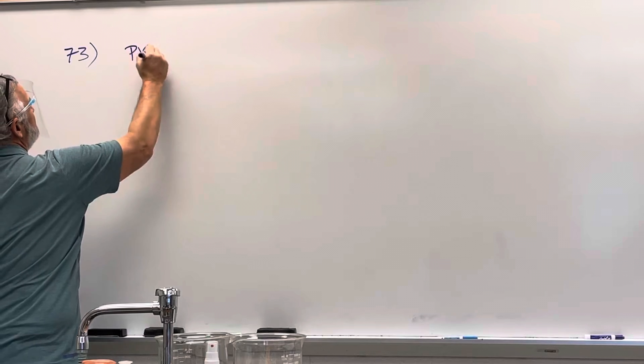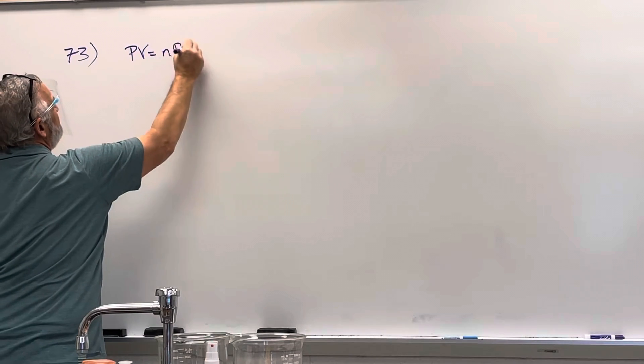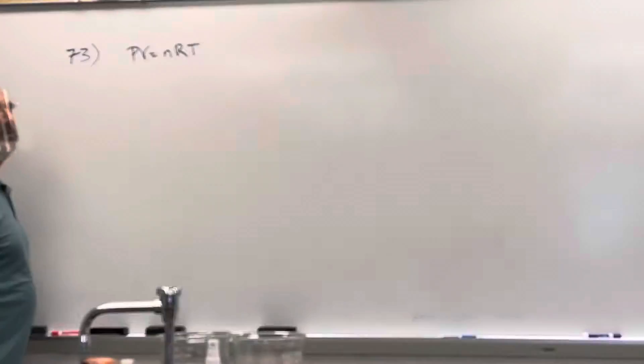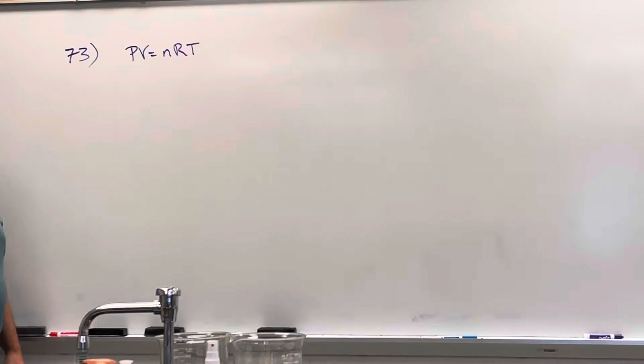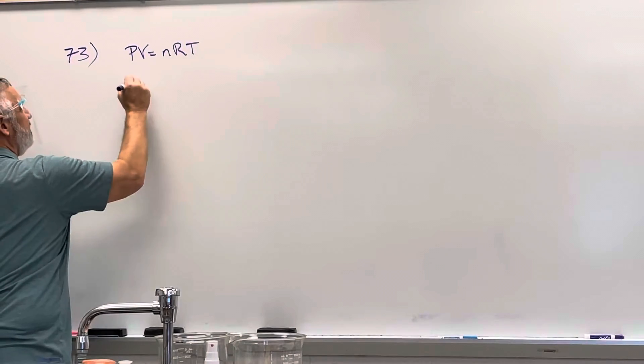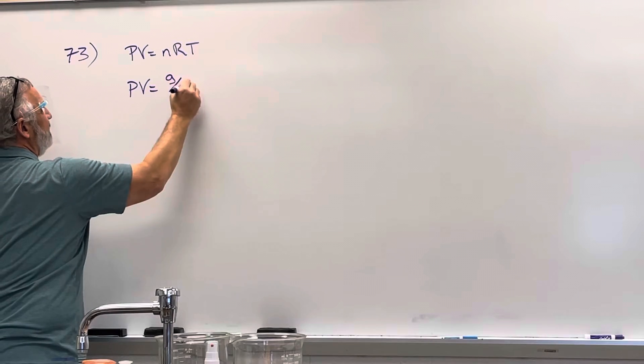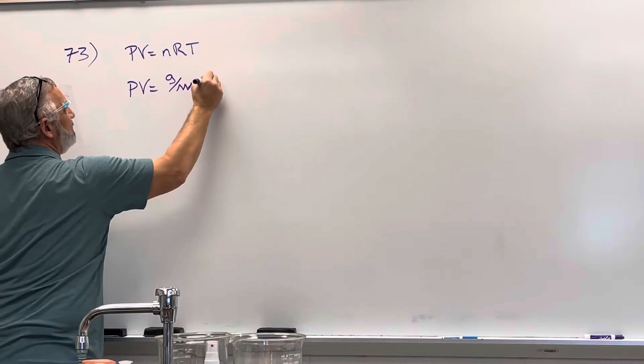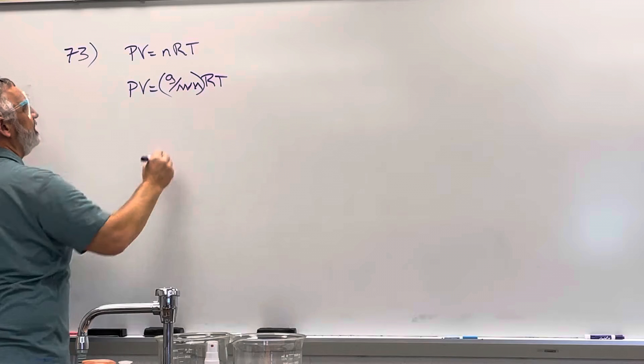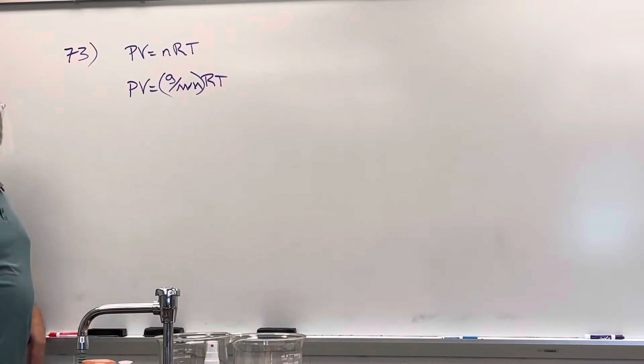So PV equals nRT, but because I'm given grams, which form of this? PV equals grams over molar mass RT. But is that going to get me to STP?